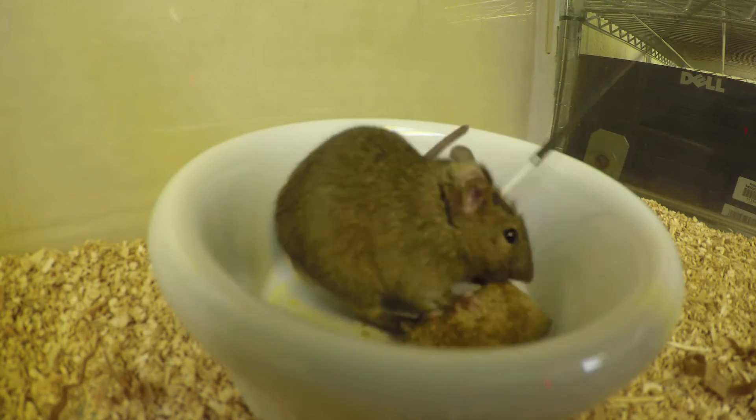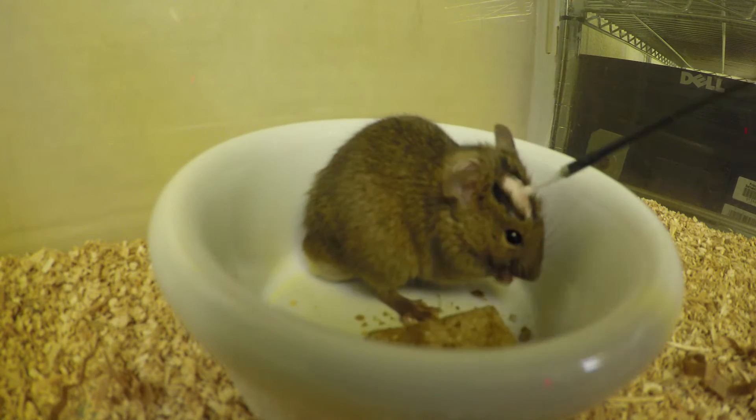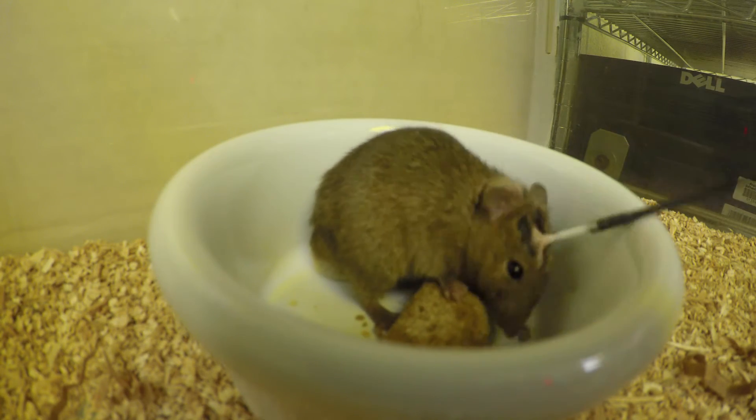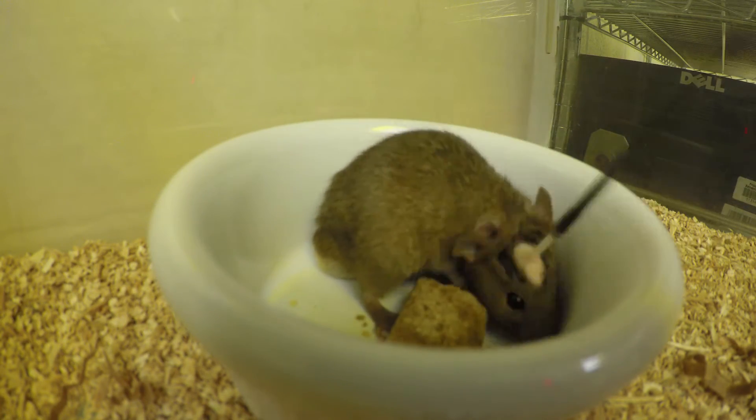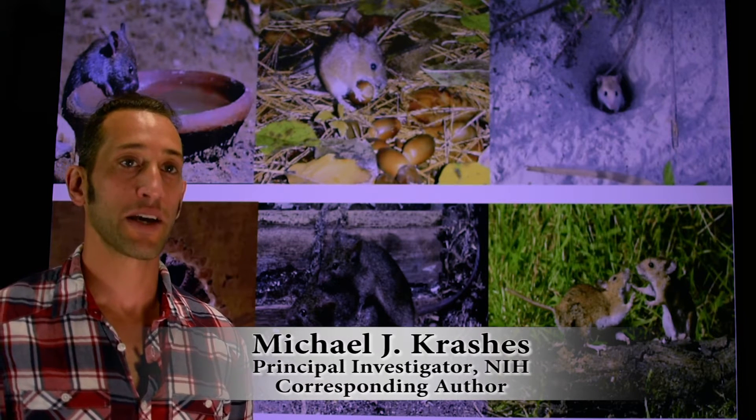Here, we are photo-stimulating AGRP neurons employing optogenetic techniques. When we first observed this striking behavior a few years back, it was in a controlled environment looking solely at food intake. However, whether AGRP neurons can modulate other behaviors is not well known.